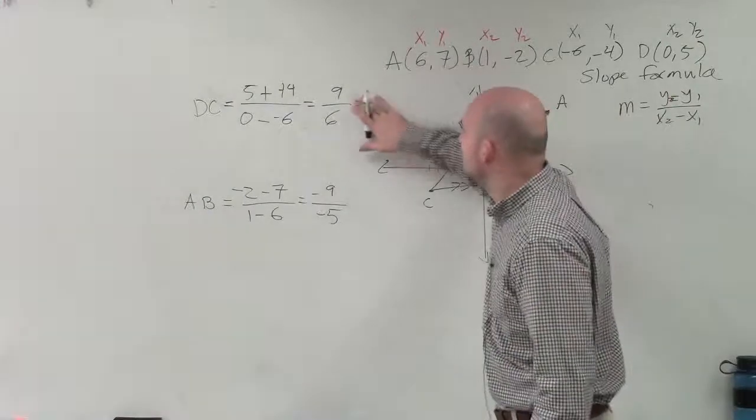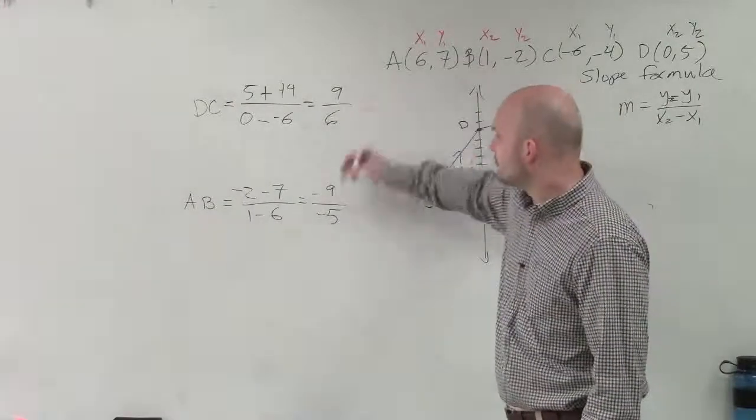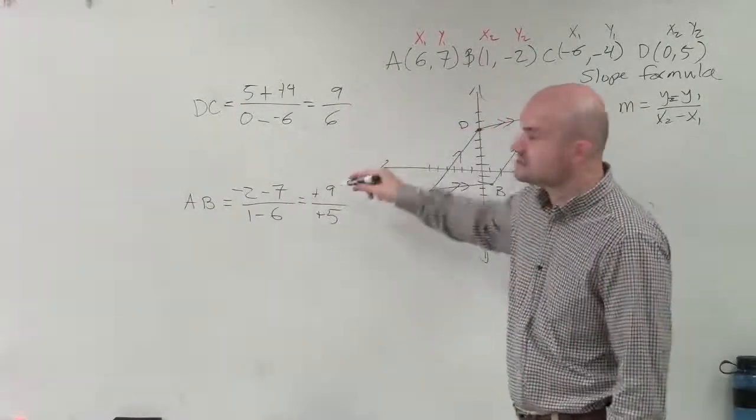Is negative 3 halves the same as negative 9 over 5? Or even forget about reducing it. Let's look at it non-reduced. Is 9 over 6, that becomes positive. Is 9 over 6 the same as 9 over 5?